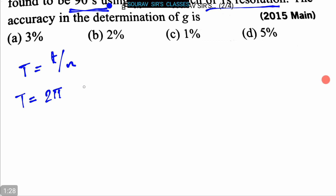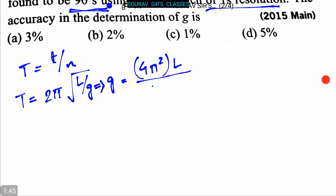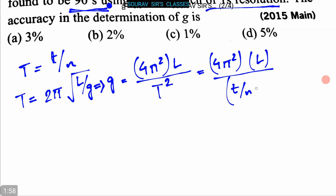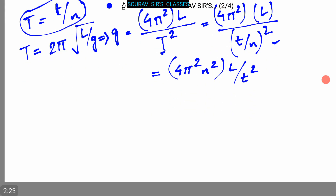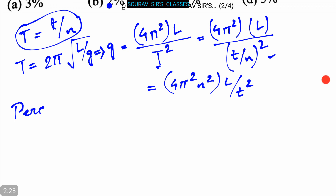It is also given that T = 2π√(l/g). We can write this as g = 4π²l / T². Substituting T = t/n, we get g = 4π²l / (t/n)² = 4π²n²l / t². So the formula for g in terms of the measured quantities is established.